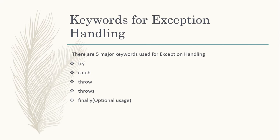There are 5 keywords used in exception handling: try, catch, throw, throws, and finally. The try block is used to check a particular condition. If there is any exception, it enters the catch block. Throw is used to create an exception. Throws is used to call an exception. Finally is an optional usage.